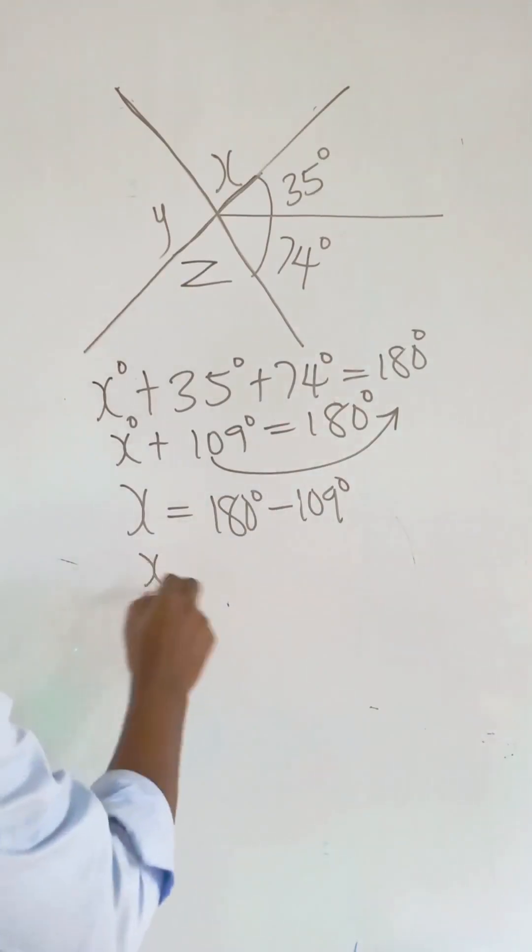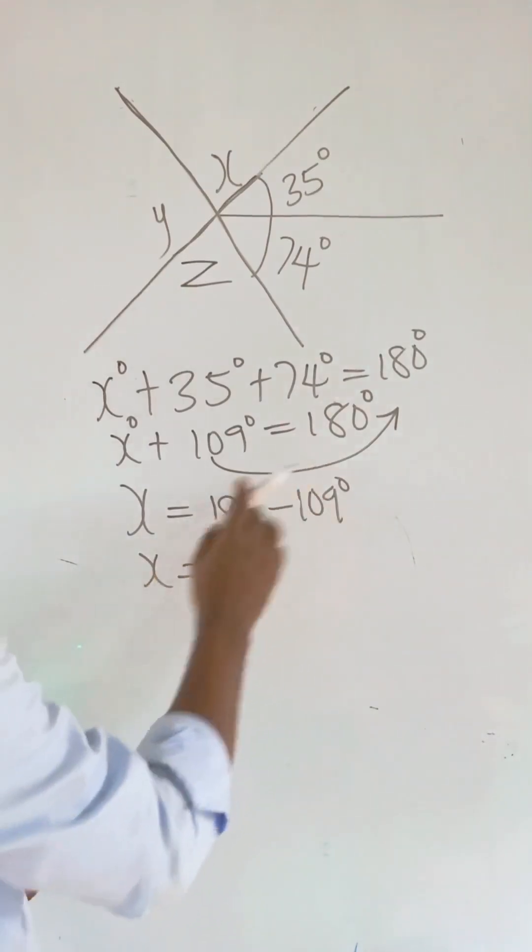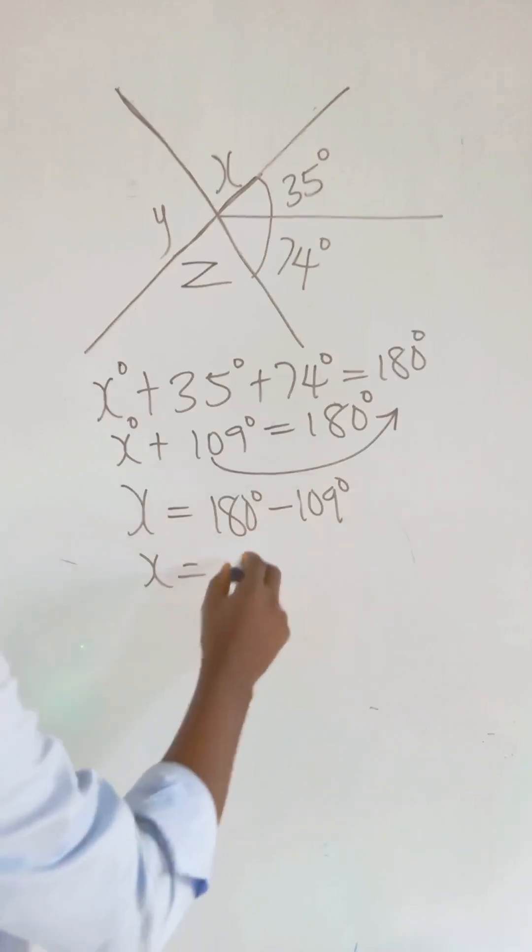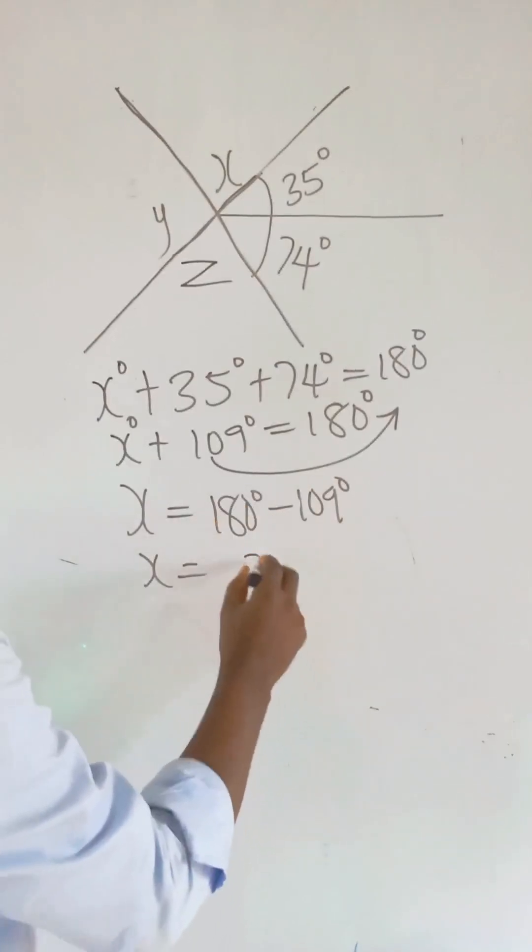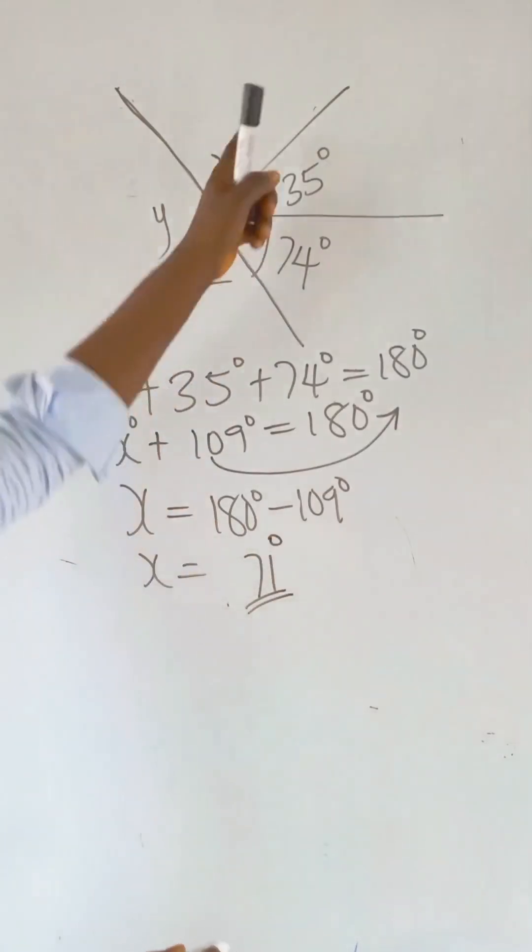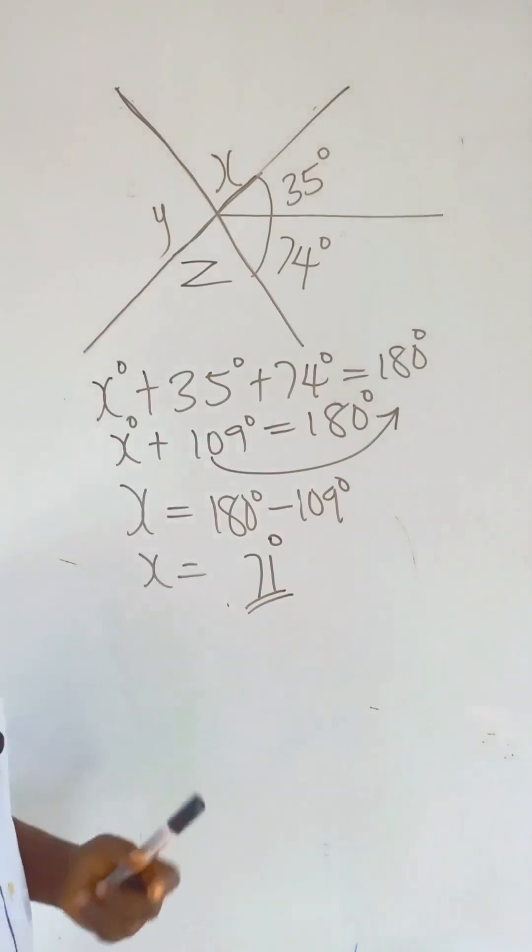So we have X to be, pick 1 and put here minus, it becomes 1, and then 7. We have 71 degrees to be the value of X.